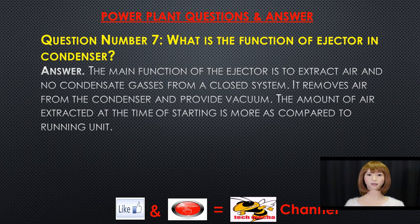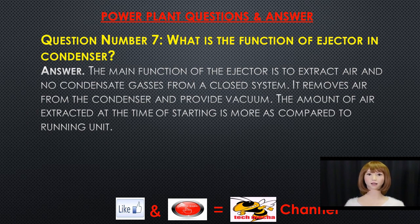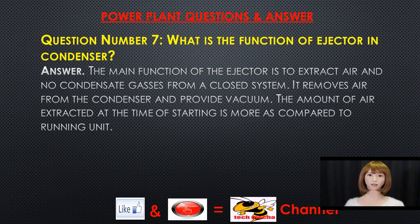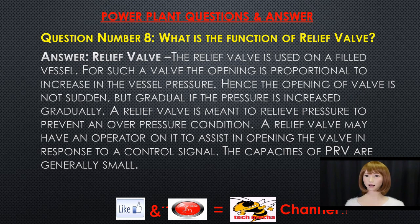Question number seven: what is the function of an ejector in a condenser? The main function of the ejector is to extract air and non-condensable gases from a closed system. It removes air from the condenser and provides vacuum. The amount of air extracted at the time of starting is more as compared to a running unit.